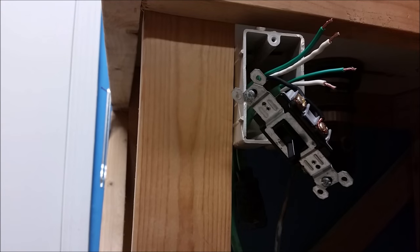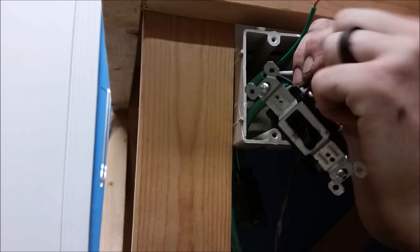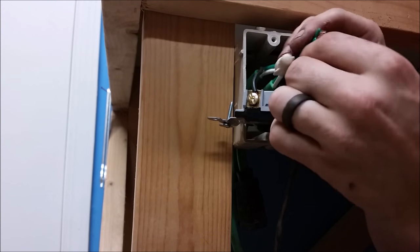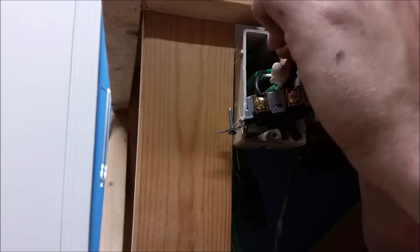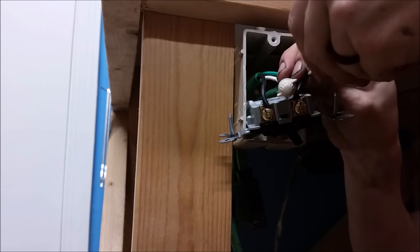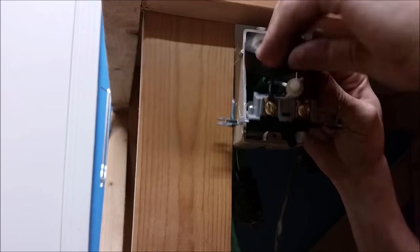Now that those are all wired up we can connect both of our neutrals together and install a wing nut and then we can connect all three of the ground wires and put a wing nut on that as well. And just to make sure those don't come off I'm just going to wrap them with some electrical tape and keep them insulated.